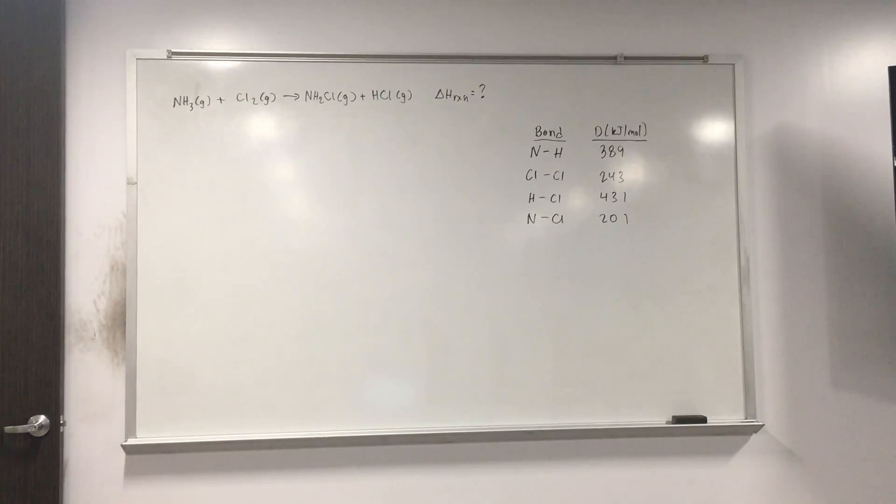So this one's a bond dissociation energy question. It says calculate the enthalpy change, delta H, for the reaction using the bond dissociation energy data. And then there's the reaction and there's the bond dissociation energy data that's given in kilojoules per mole.